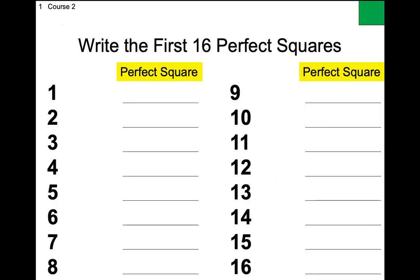Box one: write the first 16 perfect squares. I'll help you get started. Zero is actually the first perfect square, but one is our first because one times one is one. Two times two is four — four is your next perfect square. Two is not a perfect square, three is not a perfect square, but four is. The next perfect square — and away you go — the first 16.